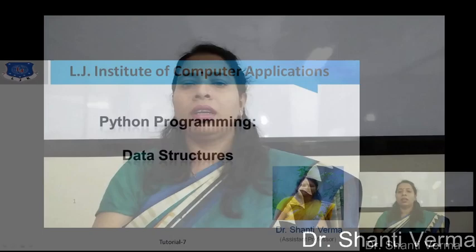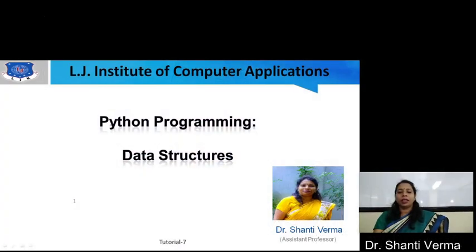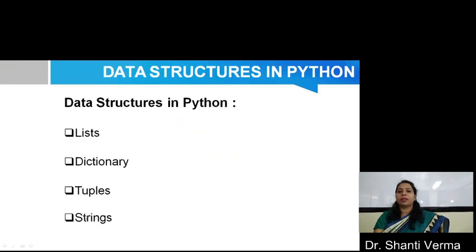Hello all, myself Dr. Shanti Barma. In today's tutorial, I am going to discuss various types of data structures in Python programming. Now, let's discuss what are the different types of data structures in Python. There are various types of data structures like list, dictionaries, tuples, and strings. Let's discuss all these in detail.